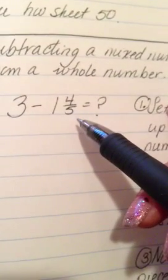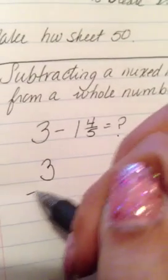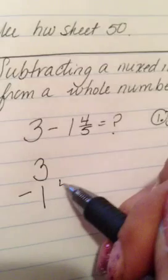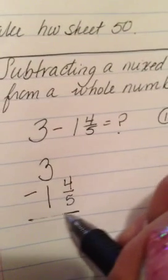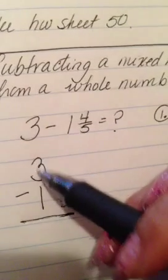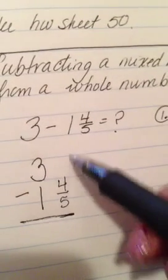So let's look at my work here. So I have 3 minus 1 and 4 fifths. Let's just line that up vertically. And I'm going to put my whole numbers together and put my 4 fifths together. I want my whole numbers together and my fractions to be together.